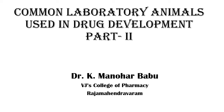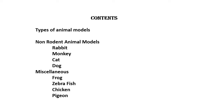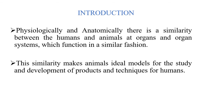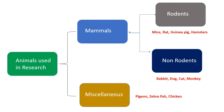Hi everyone, I'm Dr. Manohar. Here we'll continue Part 2: common laboratory animals used in drug development. In this class we are going to discuss about the non-rodent animals such as rabbit, monkey, cat, dog, and miscellaneous animals including frog, zebrafish, and chicken. Physiologically and anatomically there is a similarity between humans and animals at the organ and organ systems level, which is the reason why we use animals for research purposes. So far we covered rodents; in this class we discuss non-rodents and miscellaneous animals.